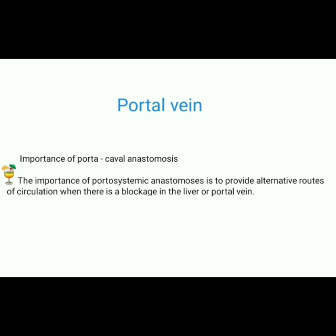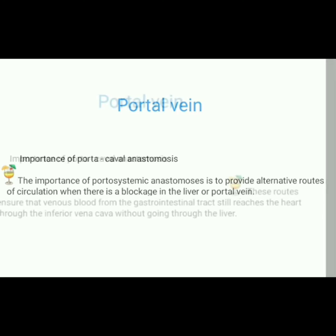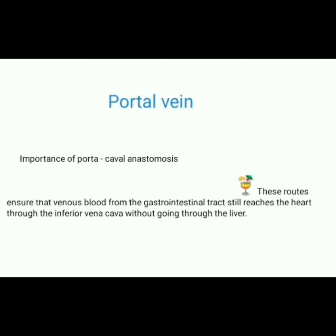Importance of portosystemic anastomosis is to provide alternative routes of circulation when there is a blockage in the liver or portal vein. These routes ensure that venous blood from the gastrointestinal tract still reaches the heart through the inferior vena cava without going through the liver.